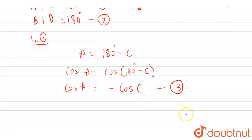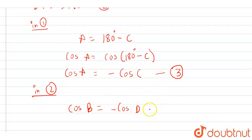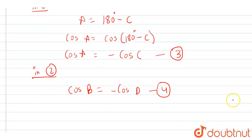Similarly, in equation two, cos B will be equal to minus cos D, because of the same property. Suppose this is our equation four.